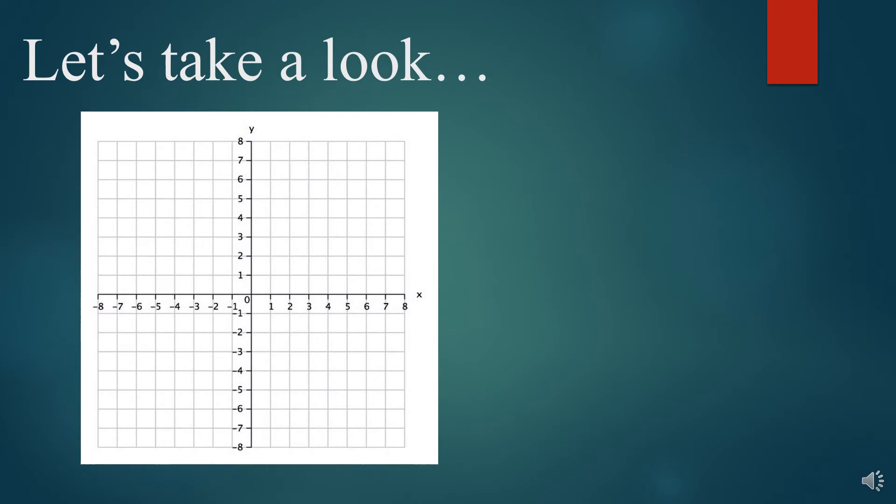Suppose that we have a triangle here on a graph, and this triangle is RST, and we are asked to translate the image 8 units to the right. So what we would do is we'd slide it over 8 units to the right, and everything would go over there.